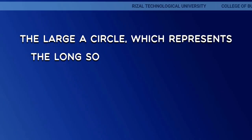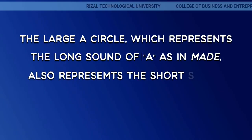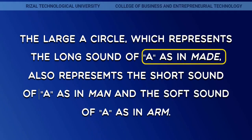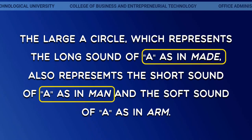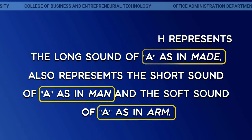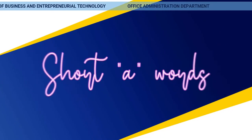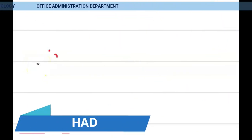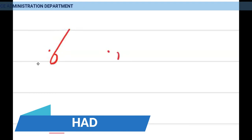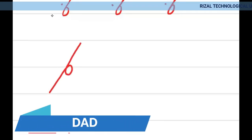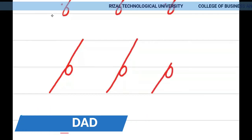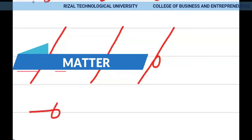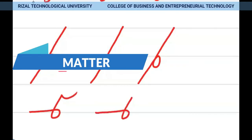The large A circle, which represents the long sound of A as in made, also represents the short sound of A as in man, and the soft sound of A as in arm. Short A words include: H, represented by a dot; had, written A-D; dad, written D-A-D — please take note of the proportion and alignment of your stroke when it comes to the D-stroke. Next: matter, written M-A-T-R.